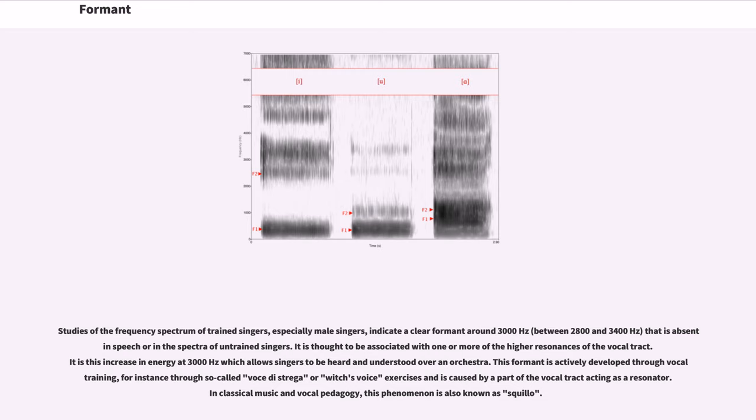It is this increase in energy at 3000 hertz which allows singers to be heard and understood over an orchestra. This formant is actively developed through vocal training, for instance through so-called voce di strega voice exercises and is caused by a part of the vocal tract acting as a resonator. In classical music and vocal pedagogy, this phenomenon is also known as squillo.